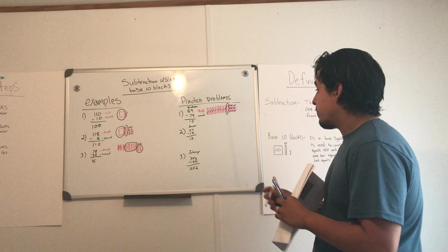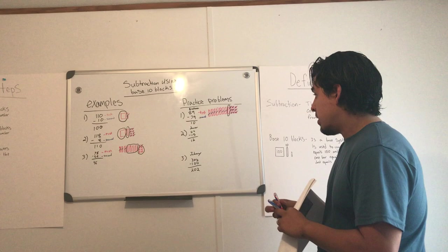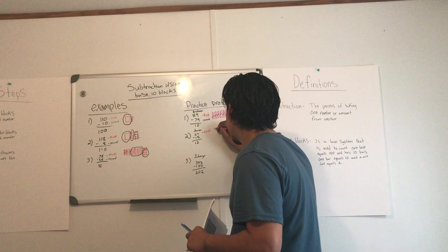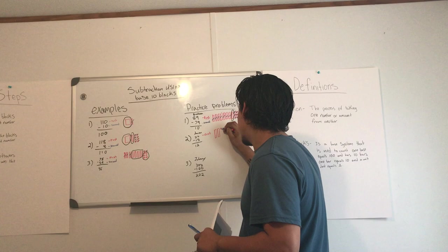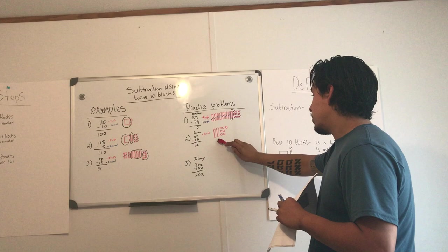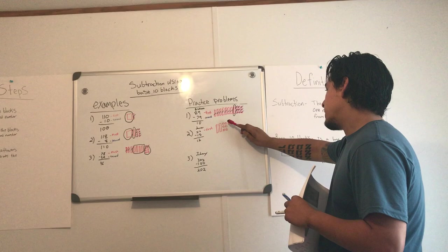All right, for Javier, Javier did the same steps. He drew the blocks for the first number, so he knows that there are two bars in 20, and then there are seven units: 1, 2, 3, 4, 5, 6, 7.